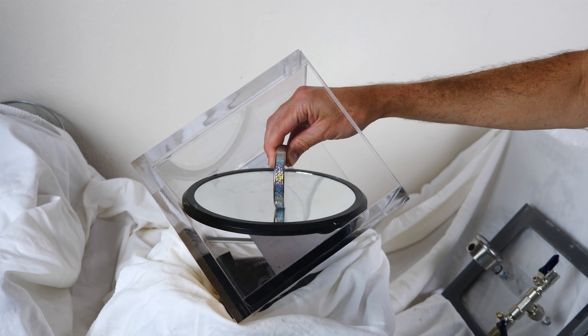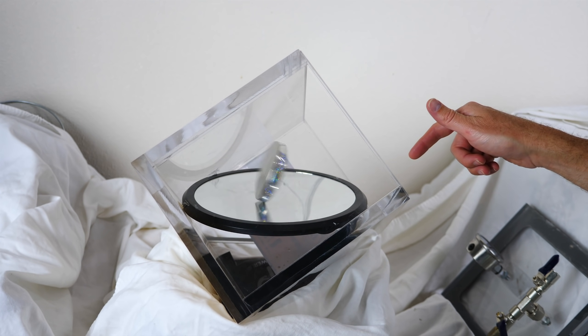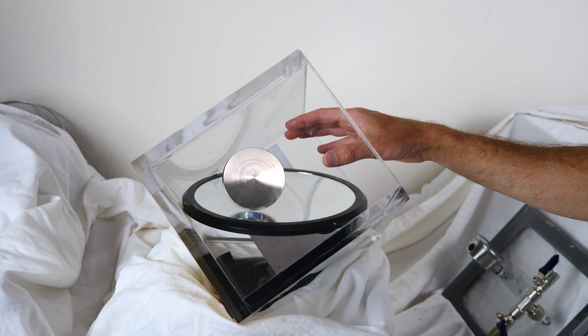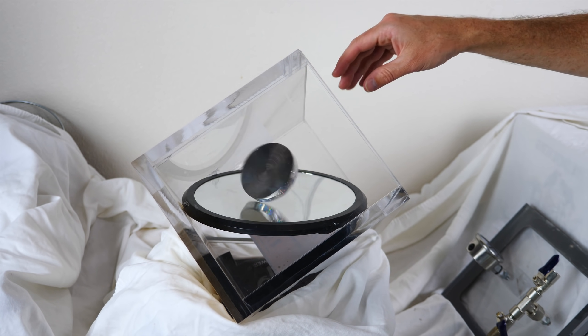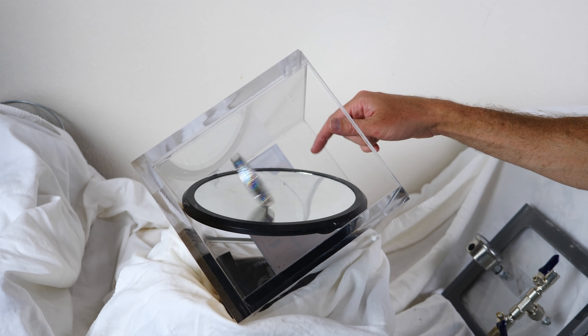Okay, everybody, today I'm going to be testing the Euler's disc in a vacuum chamber. So the Euler's disc is a really cool phenomenon that happens when you spin a coin or spin something round on a hard surface.